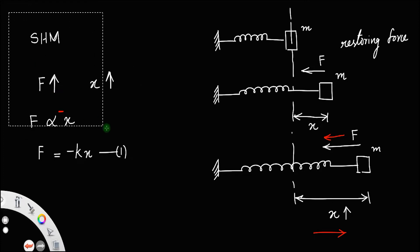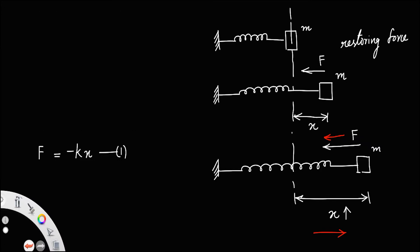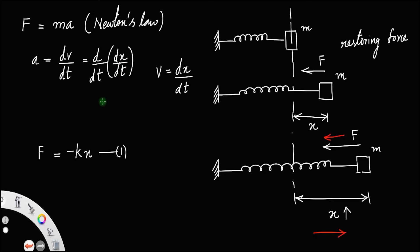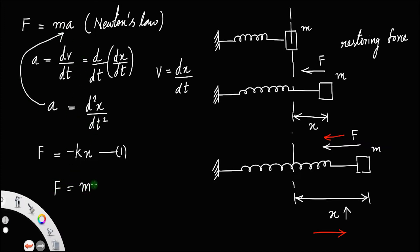Now, from Newton's law of motion, we have force F = ma, mass into acceleration. Also, acceleration is the rate of change of velocity, or dv/dt. Since v = dx/dt, you can write acceleration as d/dt of (dx/dt), which gives the double derivative: d²x/dt². So acceleration is d²x/dt², and force becomes F = m(d²x/dt²). Let us call that equation number two.